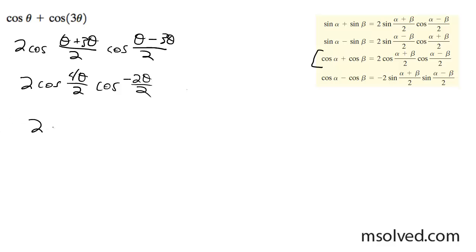And finally, this becomes 2 cosine 2 theta cosine negative theta.